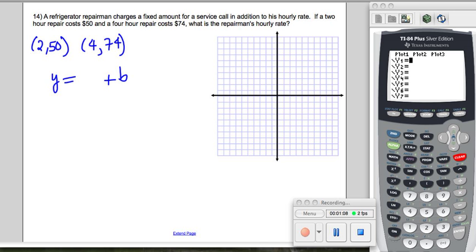And then for every hour that he works, that's our x, he charges m dollars an hour. That's our slope. So when he first shows up, we don't know how much he charges, a certain amount of money. I'm just putting a point there. That's our b, that's our y-intercept.